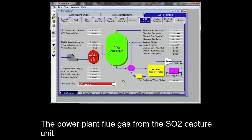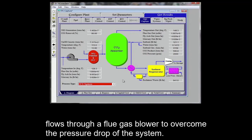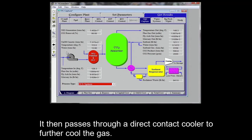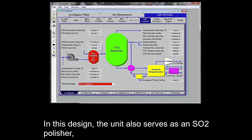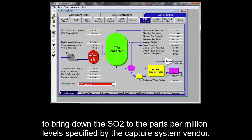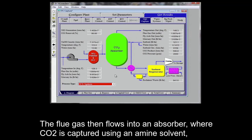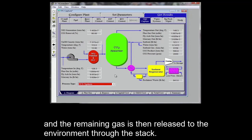The power plant flue gas from the SO2 capture unit flows through a flue gas blower to overcome the pressure drop of the system. It then passes through a direct contact cooler to further cool the gas. In this design, the unit also serves as an SO2 polisher to bring down the SO2 to the parts per million levels specified by the capture system vendor. The flue gas then flows into an absorber where CO2 is captured using an amine solvent and the remaining gas is then released to the environment through the stack.